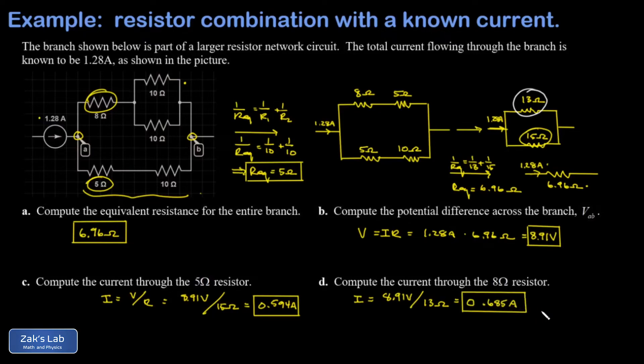That's not the only way to answer part D. An alternative would be to say, I had 1.28 amps total flowing into this network, and in part C I discovered that 0.594 of those amps flow through the lower branch, so the rest of it must be flowing through the upper branch. So I can calculate the answer for part D by just taking my original 1.28 amps and subtracting the amount that went along the lower branch.